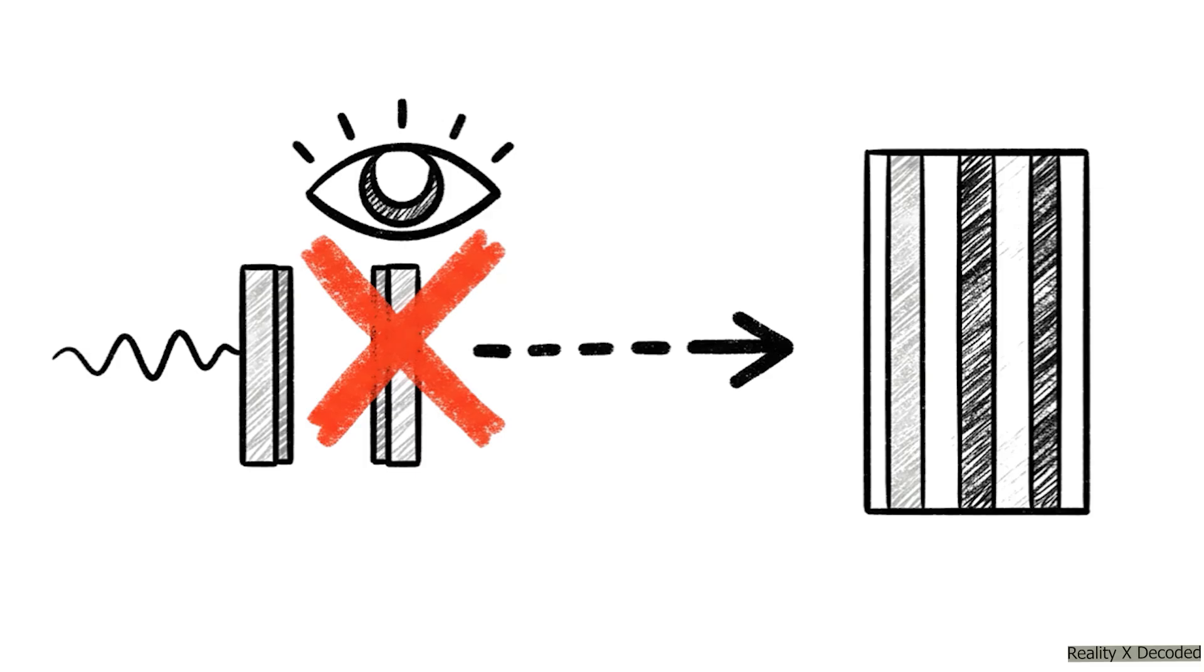With the detector turned off, so we are not watching, we get exactly what we saw before. That classic beautiful wave-like interference pattern. No surprises there. Everything's normal, or quantum normal.